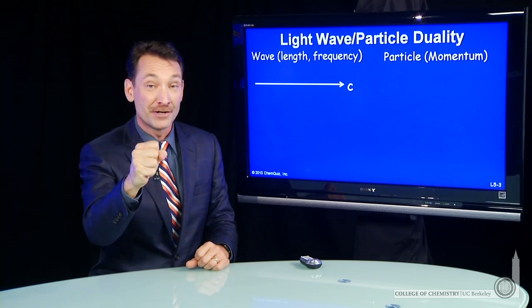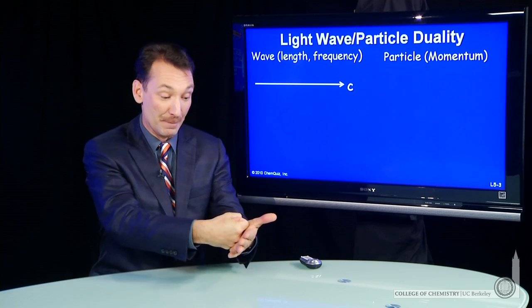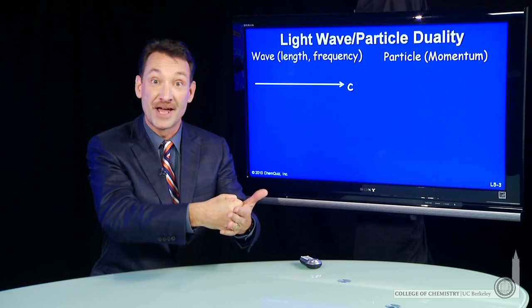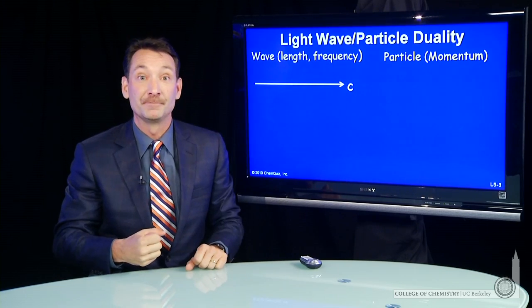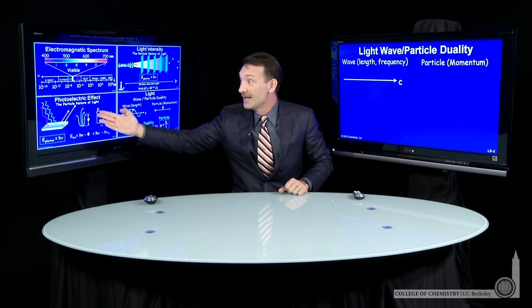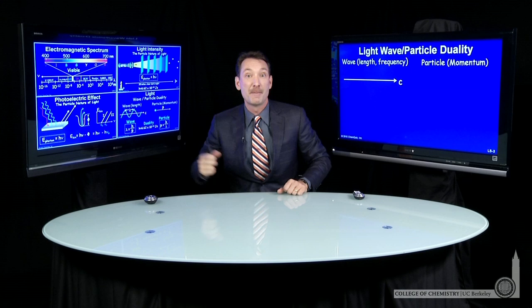Now, a particle has momentum. And we've seen the momentum of the particle, that photon, can cause an electron to be ejected from the metal. We saw, in the photoelectric effect, an incoming photon ejecting electrons from a metal.